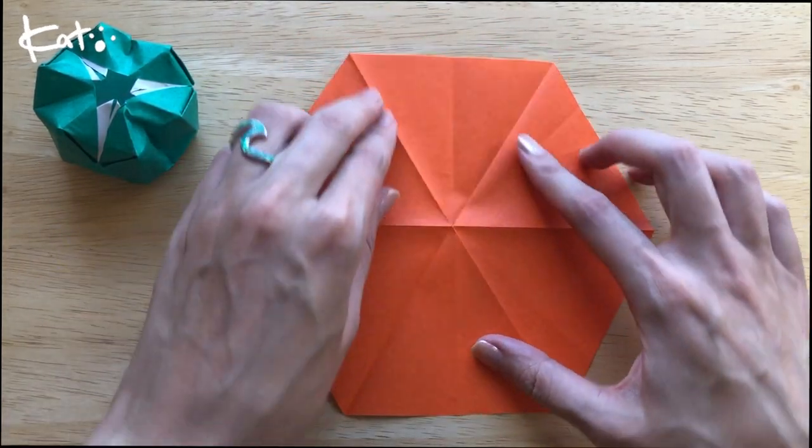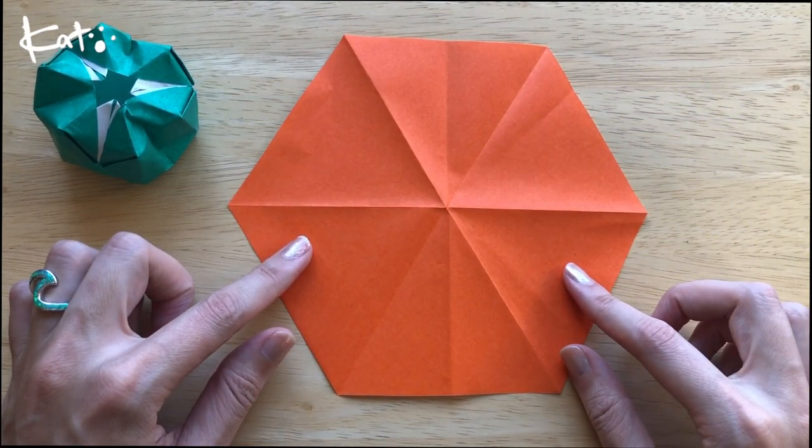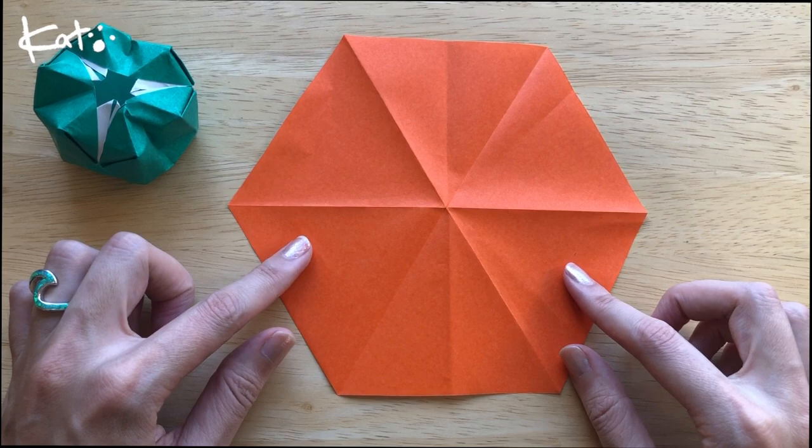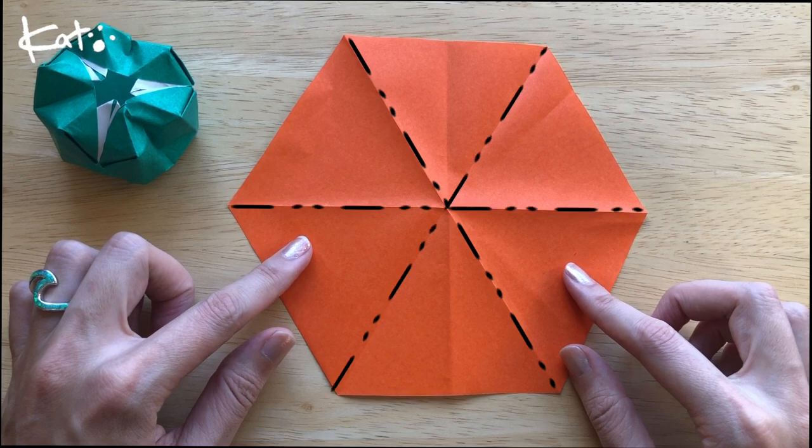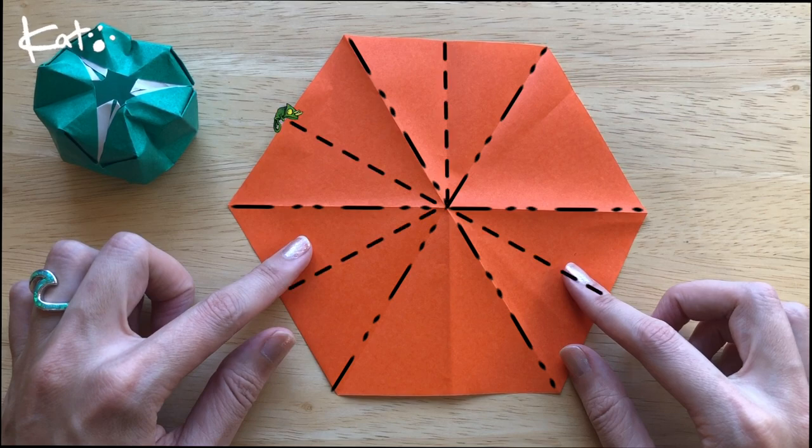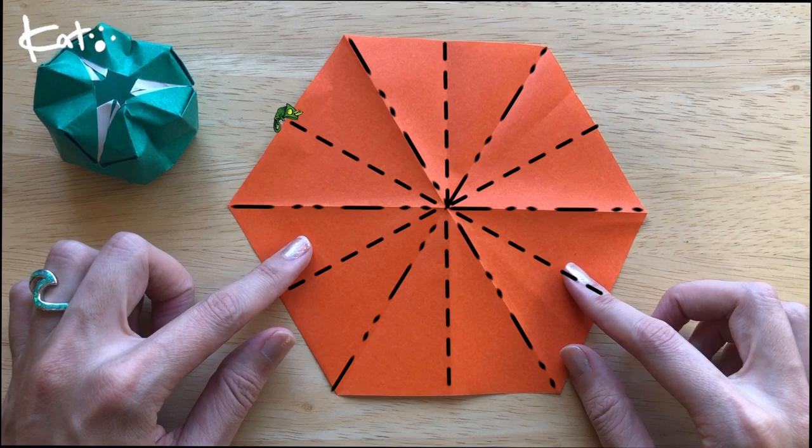Amazing. Okay so I'm going to pause this next section to explain what we want to do. All of these points are going to be mountain folds, which means that they're all going to fold over. Then all of the sections in between are going to be valley folds, which means they're going to fold under. Once we're done with these folds it's kind of going to look like an umbrella, like an open umbrella that you're looking at from the top.